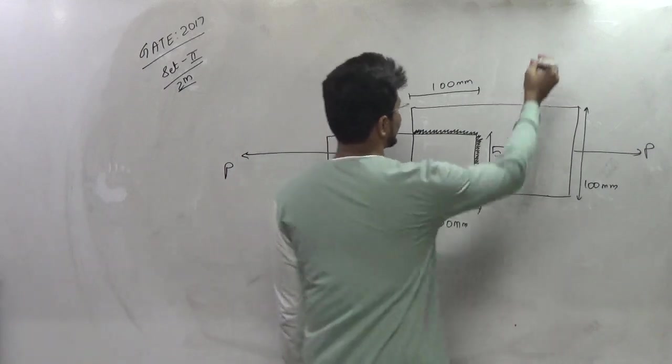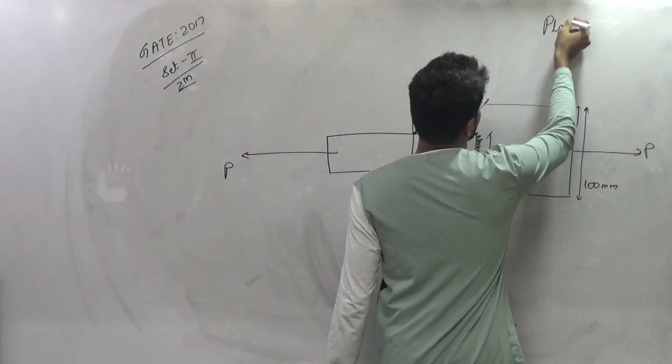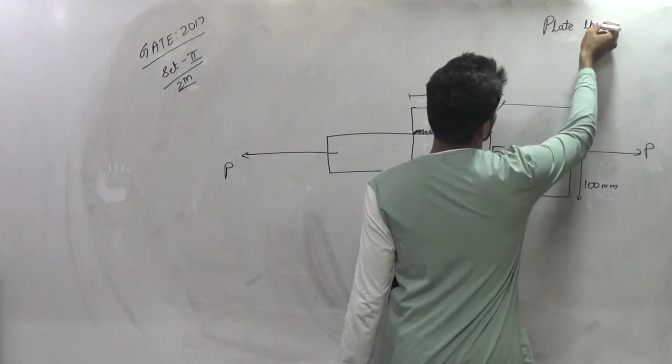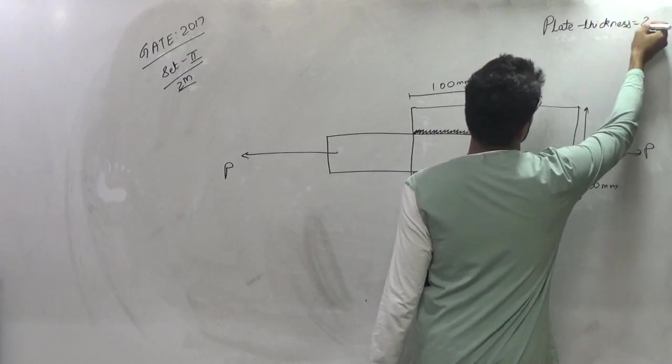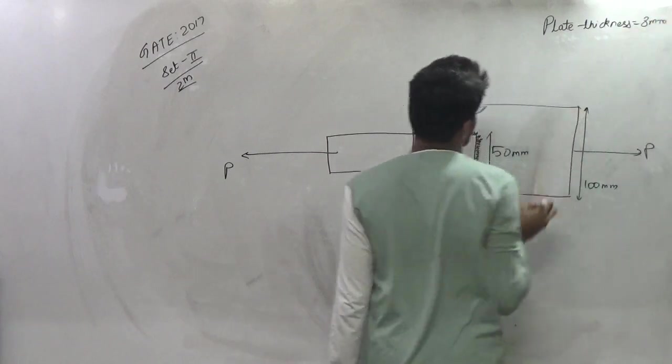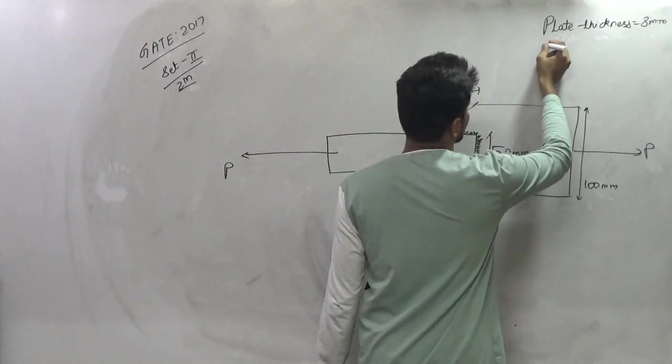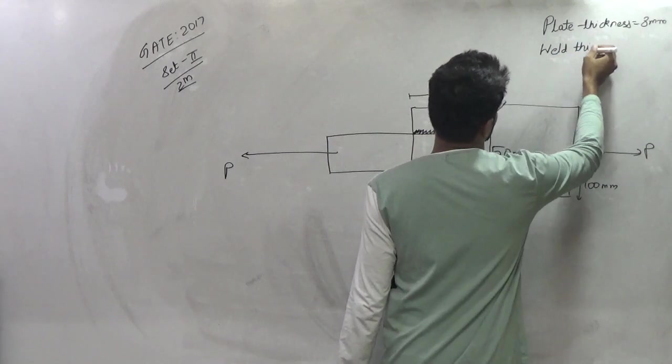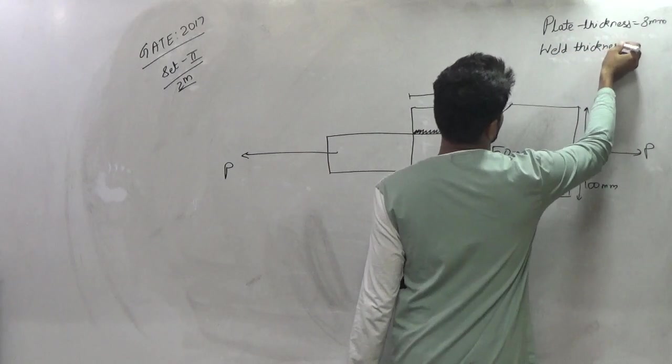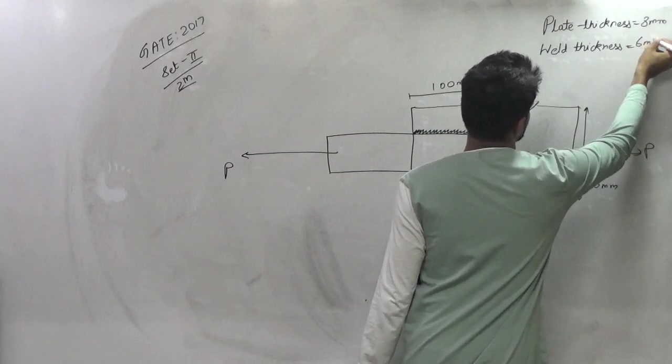Plate thickness is 8mm and weld thickness is given as 6mm.